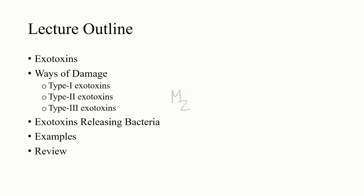Lecture outline: we've covered the exotoxins introduction. Next we'll discuss the ways exotoxins cause damage and how they are categorized — type 1, type 2, and type 3. Then we'll discuss the bacteria responsible for releasing exotoxins and which exotoxin is released by which bacteria. After that we'll look at a few examples, and at the end, as usual, we'll recap the lecture.